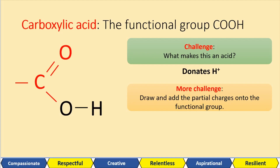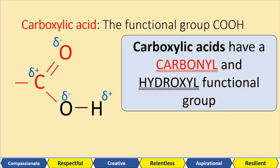I'll ask you to draw this functional group and then attach the partial charges onto it. Oxygen is electronegative, so electrons move further towards it. The carbon and the hydrogen will have delta positives, while the oxygens have delta negatives. This carboxylic group has both a carbonyl group and a hydroxyl group.